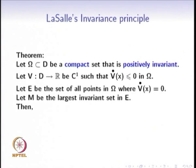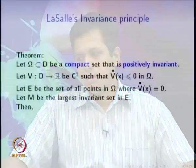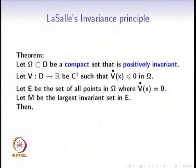Suppose omega is a compact set that is positively invariant, and suppose we have found a function V that is C1 — meaning differentiable with continuous derivative — such that V-dot is less than or equal to 0 on this set omega. For this V, we find a set E such that V-dot equals 0 on E. Let M be the largest invariant set in E — invariant under the dynamics of the system, contained in E, and the largest such set. Any other subset of E satisfying these properties is also contained in M.